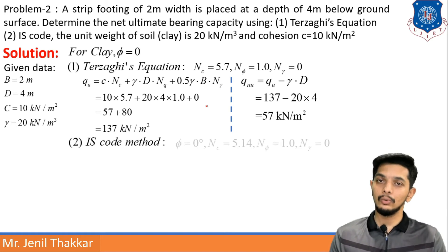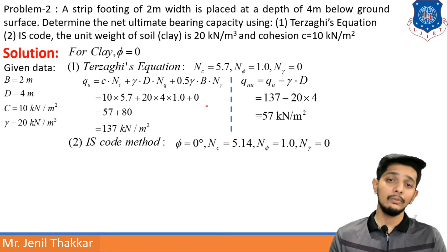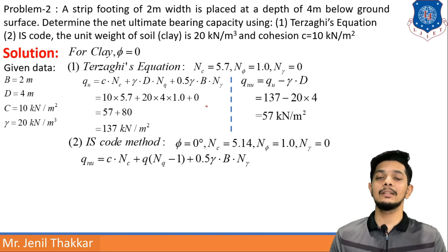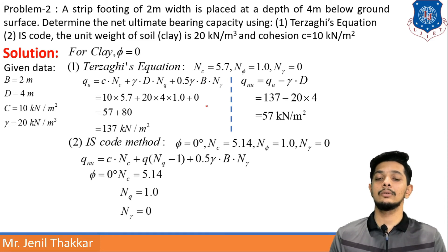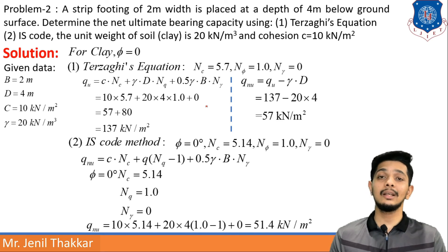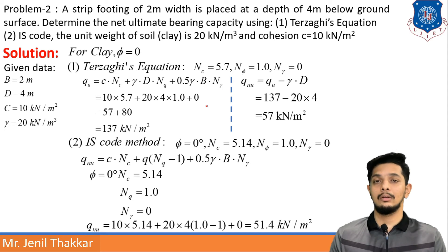Now applying the IS Code method with φ = 0 degrees: Nc = 5.14, Nq = 1, Nγ = 0 from the IS Code table. The formula gives q_nu = c·Nc + q(Nq − 1) + 0.5·γ·B·Nγ = 51.4 kN/m². Comparing the two methods: Terzaghi gives 57 kN/m² and IS Code gives 51.4 kN/m². The lower value (IS Code) is safer to use in design.